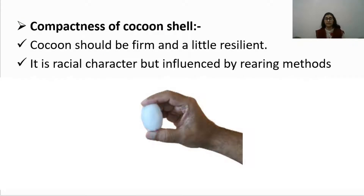Compactness of the cocoon shell is another desirable feature. The cocoon should be firm and a little resilient — meaning when you press the cocoon slightly between your fingers and release it, it should return to its original shape. Compactness is again a racial character but is influenced by rearing method, so proper rearing leads to good cocoons.